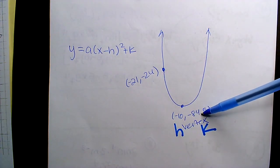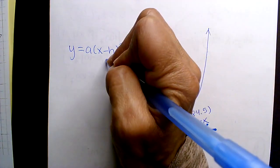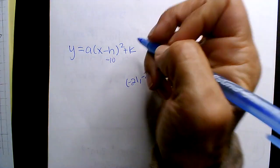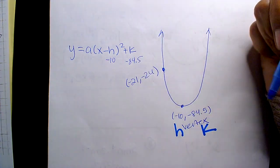Vertex is H, K, so obviously negative 10 should go there, negative 84.5 should go here.